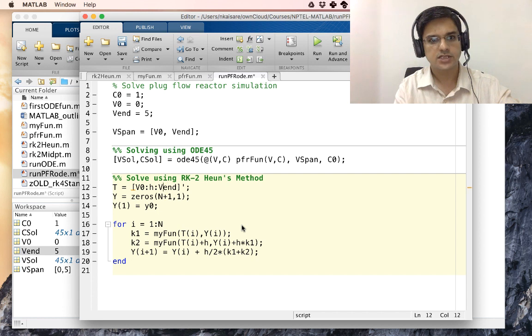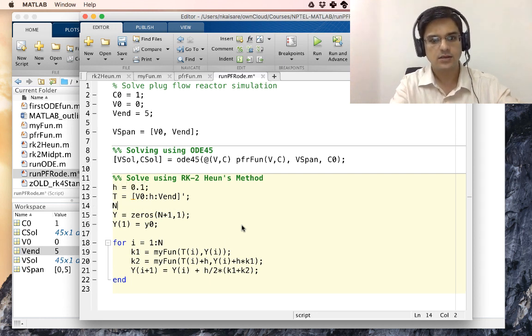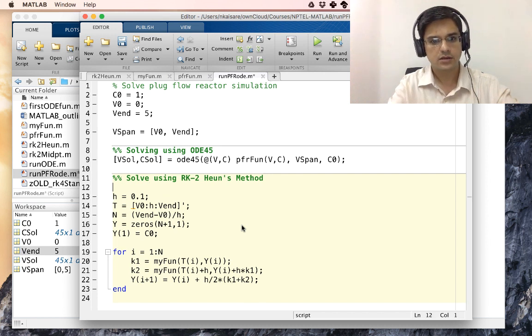So this will go from V naught up to V end. That's our T in steps of H. So let us also say what H is going to be. H is going to be 0.1. So N has got to be V end minus V 0 divided by H. That's our N. We have our Y equal to zeros N plus 1 comma 1 and Y1 is the dependent variable. In this case, the dependent variable is C naught. So I will just replace this.